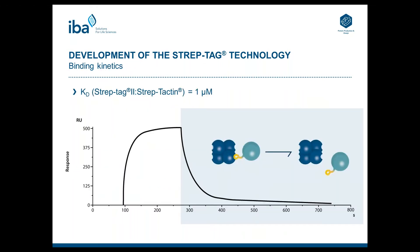To understand this, we will have a look at the binding kinetics of the system. Here you see a Biacore measurement of StrepTech 2 fused to bacterial alkaline phosphatase. What you see in the sensorgram is that the interaction has a quite fast on-rate. This is the stage where the protein binds to the Streptactin resin via its StrepTech 2. It would be hard to improve the on-rate because it is already quite fast. Another idea was to lower the off-rate where the protein is released from the Streptactin, but lowering the off-rate would also mean that it hampers the elution in a competitive manner.